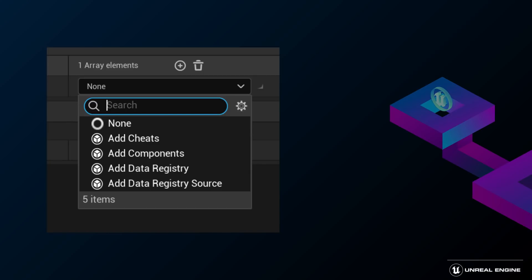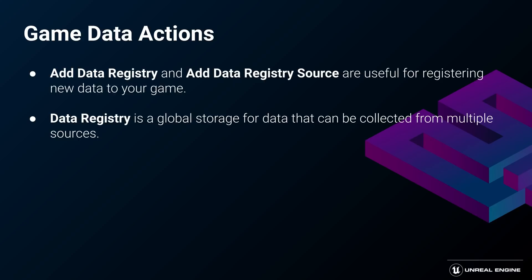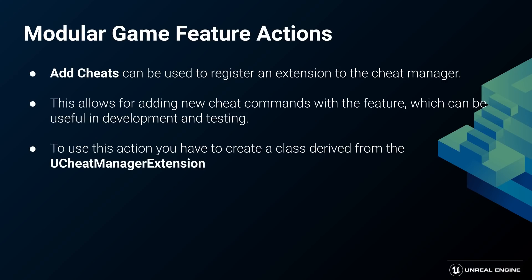The engine comes with some actions predefined, such as Add Cheats, Add Components, Add Data Registry, and Add Data Registry Source. The last two are useful for a data-driven gameplay creation approach. You can read more about data registries in the UE5 documentation. Add Cheats allows you to add an extension to the cheat manager, enabling you to create feature-related cheat commands that can be helpful in testing.